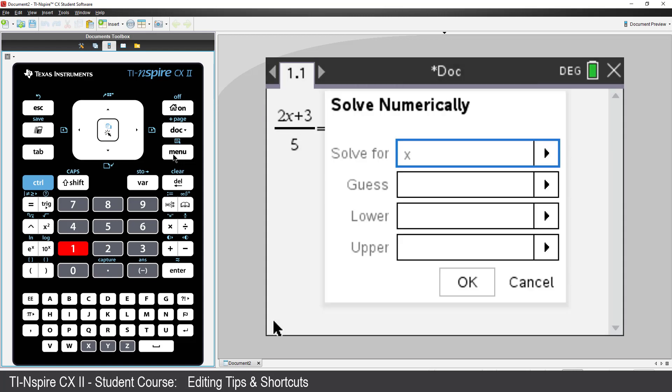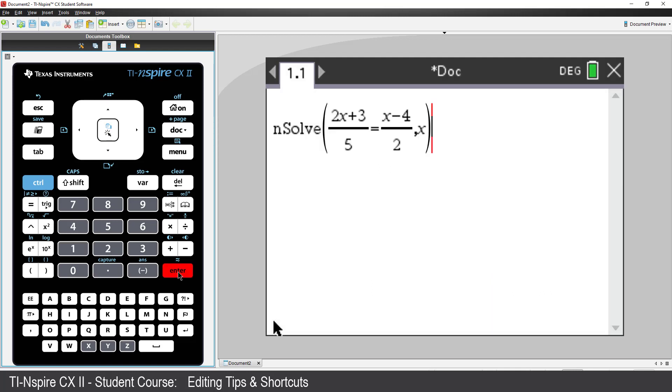TI-Inspire automatically identifies the variable in our equation and provides an opportunity to input a domain for the solution and or a guess. I could navigate down to the OK button, but just like on a computer, it's quicker just to press Enter on the keyboard. The appropriate command and syntax is created. Now, all I need to do is press Enter to execute the command.